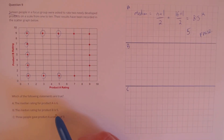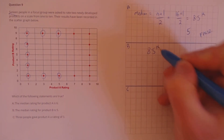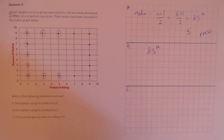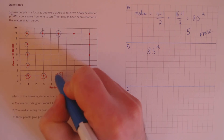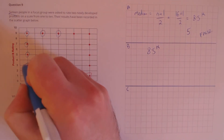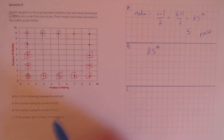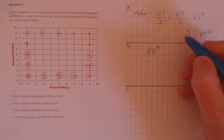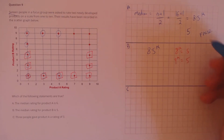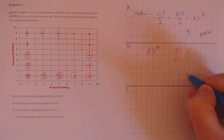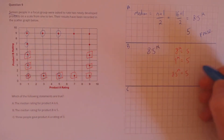Statement B: the median rating for product B is 5. We're still looking for the 8.5th place but on the y-axis this time. Counting: 1, 2, 3, 4, 5, 6, 7, 8, 9. The 8th place is 5 and the 9th place is also 5, so the average for the 8.5th place is 5. The claim is that it was 5, so that's true.